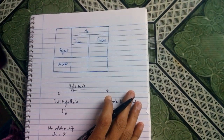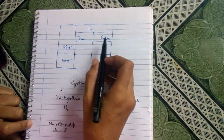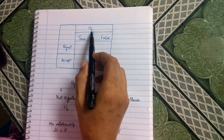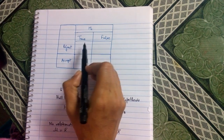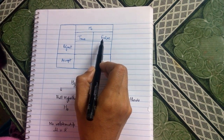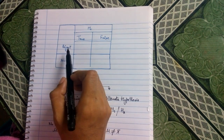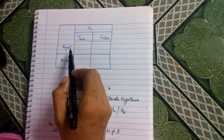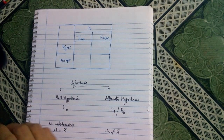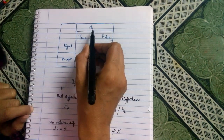I have made a box in which I have taken the null hypothesis. The null hypothesis could be true or it could be false. When we take the decision about the null hypothesis, we decide whether we should accept or reject the null hypothesis. So there could be two conditions about the hypothesis: it could be true or false, and our decision could be to reject or accept it.